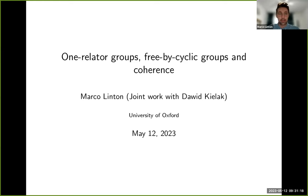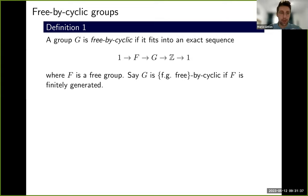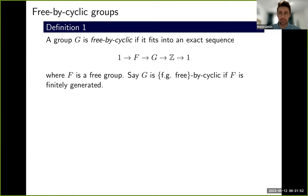First, I should define the things in my title. I will not be assuming that my free bicyclic groups are finitely generated. For me, a free bicyclic group is a group which fits into an exact sequence with a free group on the left and an infinite cyclic group on the right. The free group F can be infinitely generated — I will generally be assuming my groups are countable, but F can be an infinitely generated free group.